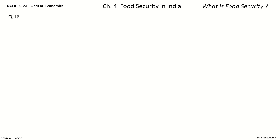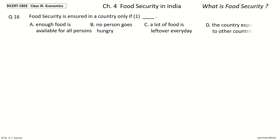Question 16: Food security is ensured in a country only if number one dash. The options are: enough food is available for all persons, no person goes hungry, a lot of food is left over every day, the country exports food to other countries. Your time to choose. And the answer is: enough food is available for all persons.